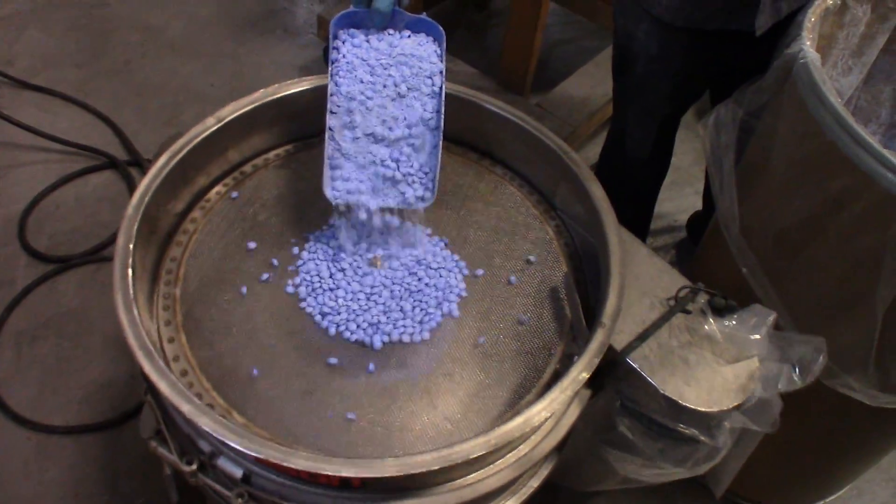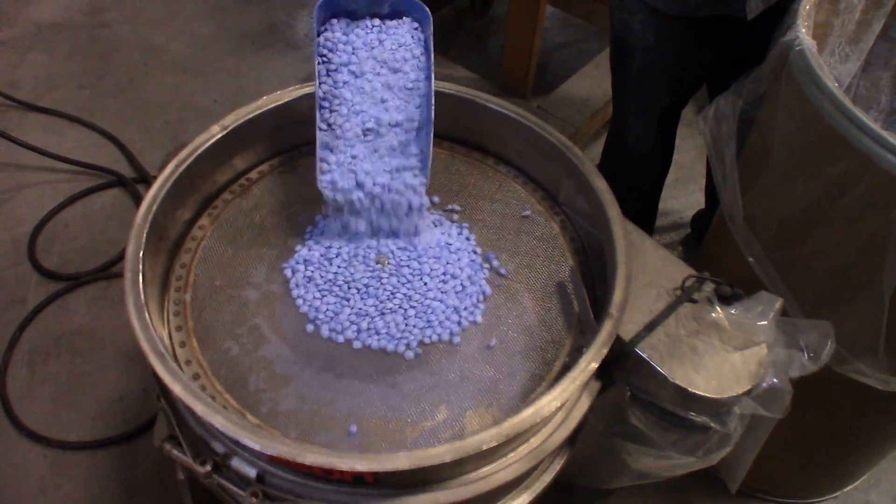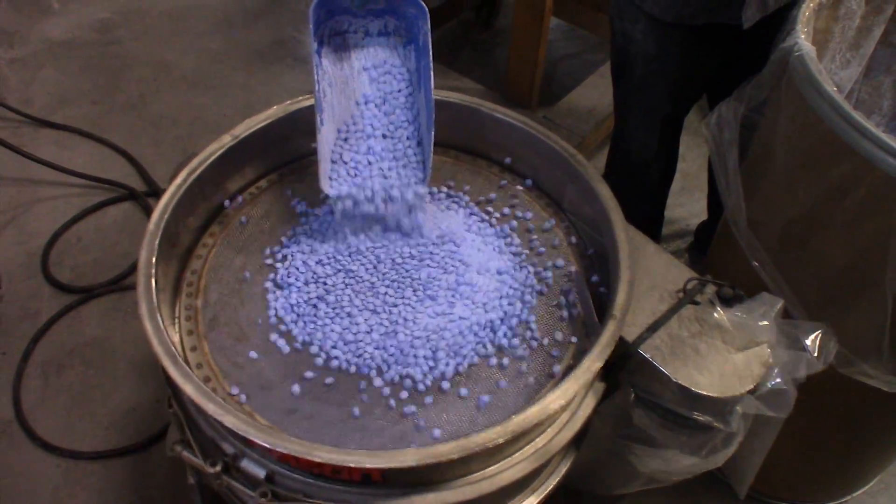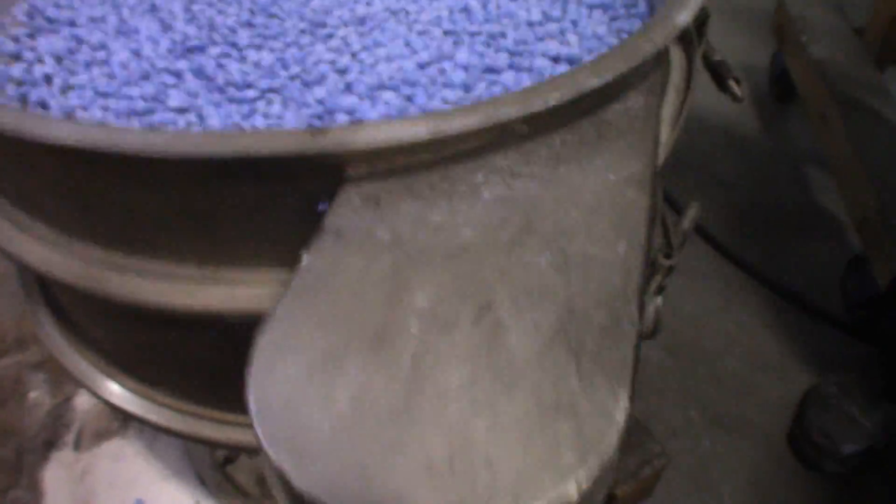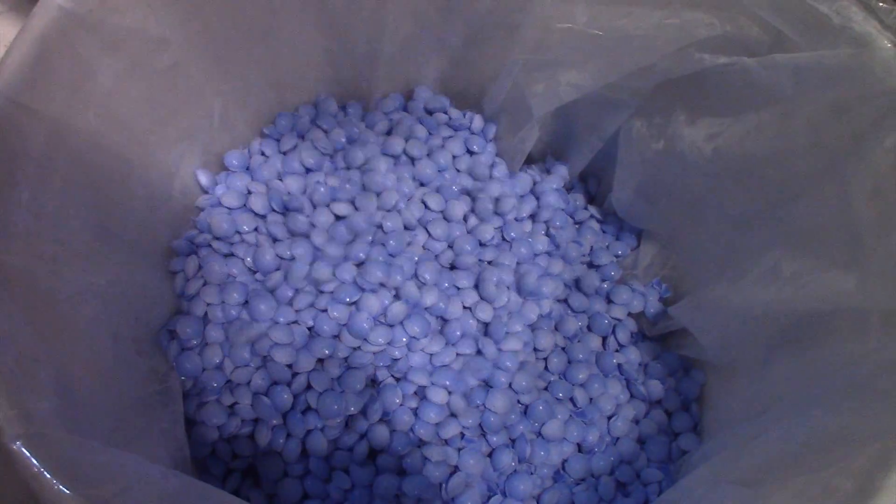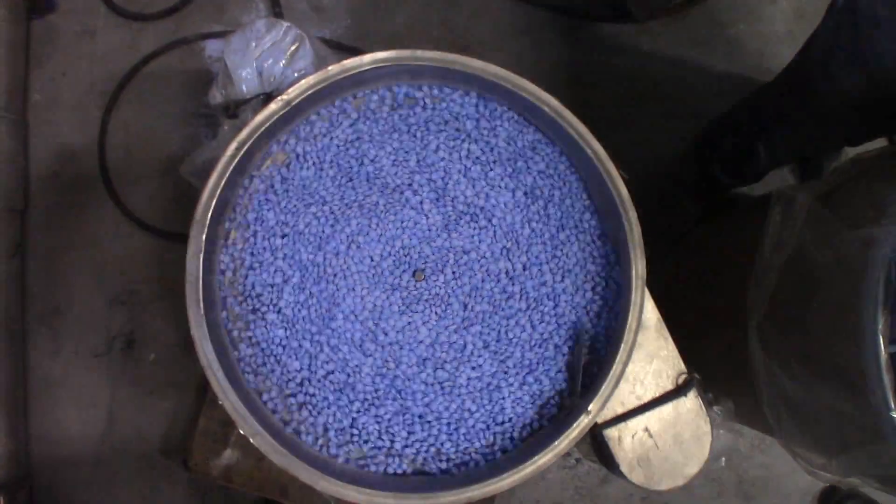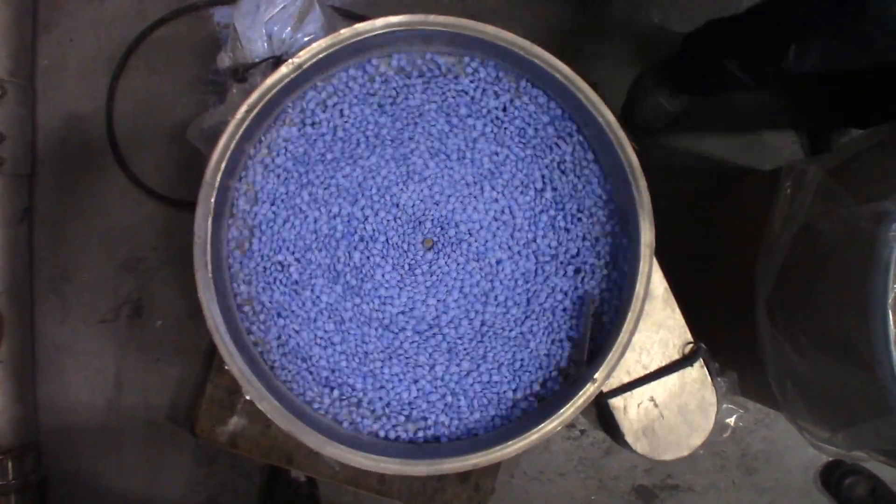The screener cleans the briquettes and separates dust and broken pallets from the final product. The clean, dust-free briquettes exit the screener for collection. Dust and briquette fragments are collected in a separate drum and recycled to the compactor.